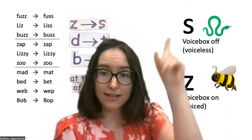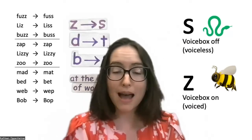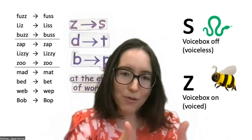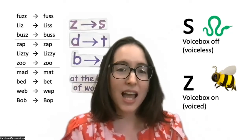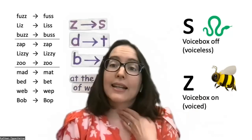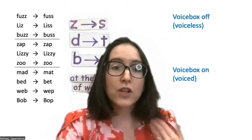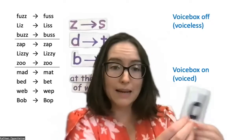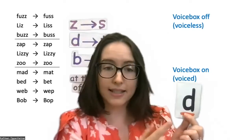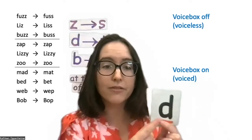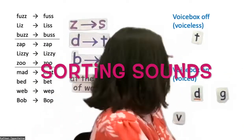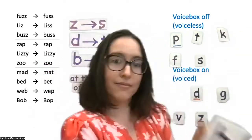So we can have these pairs of sounds — like Z and S — that are made with the same part of our mouth. In this case, it's the tip of your tongue up behind your front teeth, pushing air out between your teeth and tongue, but they're different in terms of what your voice box is doing — whether it's on or off. So we can sort some more sounds into voiced and voiceless. I like to do this by holding up my sound cards and asking: is your voice box on or off for this sound? It's on, so we put it here.